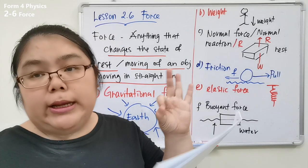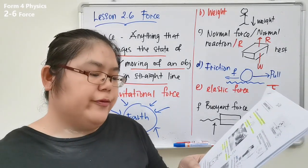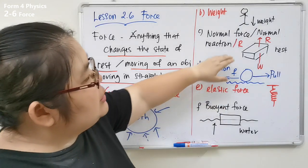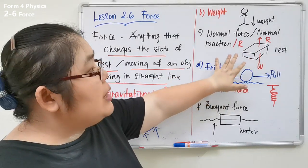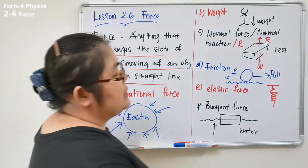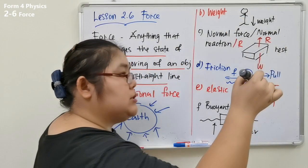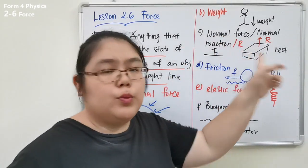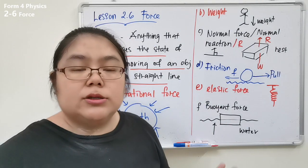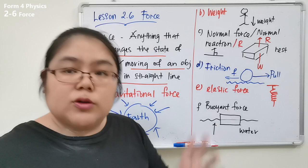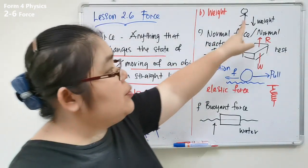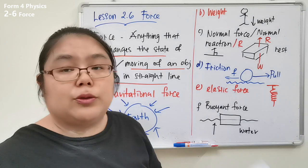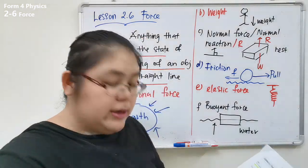Number three is normal force. Normal force refers to the force that is perpendicular to the surface where the object is placed. For example, a box at rest on a surface — the normal force acts upward, perpendicular to the surface. You can also call it normal reaction. For an object at rest or moving, two forces act: normal reaction upward and weight downward.